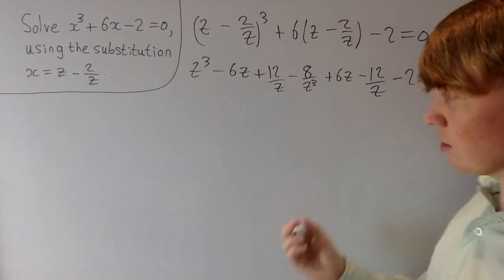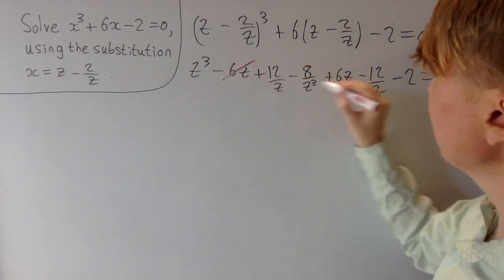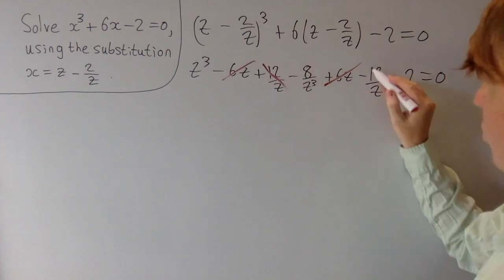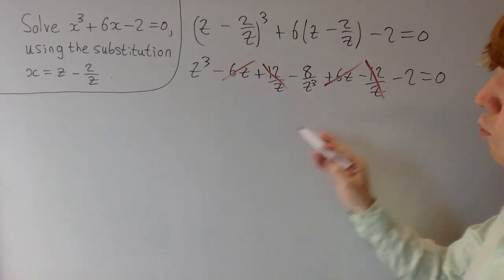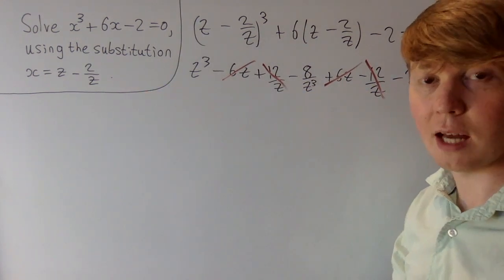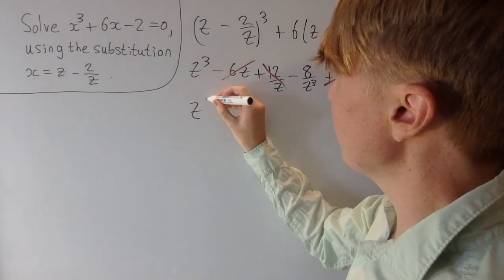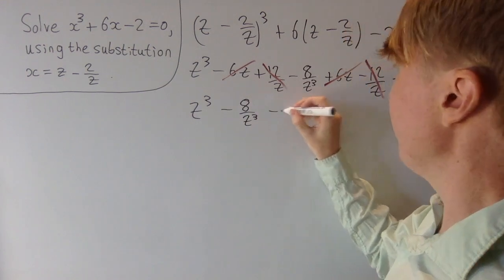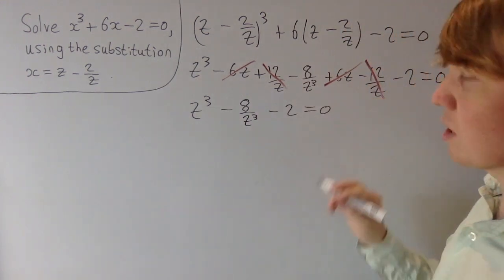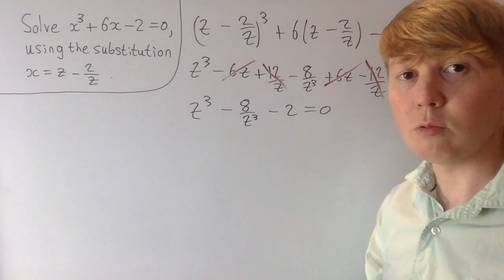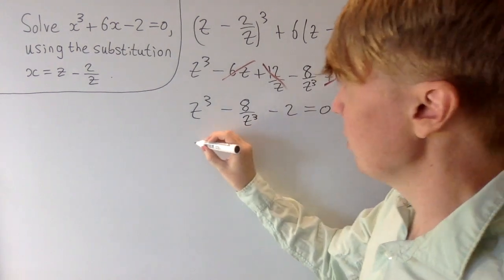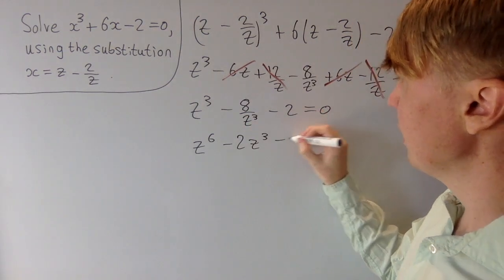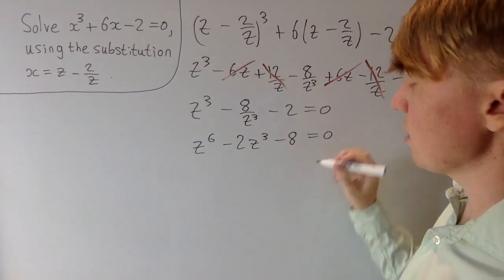Quite a few things are going to cancel. Our minus 6z cancels with our plus 6z, and our plus 12 over z cancels with our minus 12 over z. This reflects the substitution choice we've made. So now all we're left with is z cubed minus 8 over z cubed minus 2 is equal to 0. We multiply by z cubed to get z to the 6, then minus 2z cubed, minus 8 equals 0.